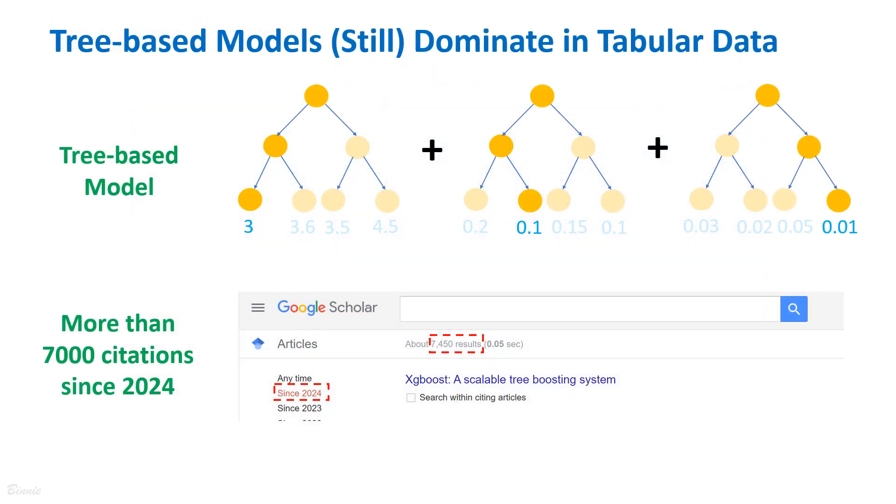In recent years, researchers have shown that tree-based machine learning models such as LightGBM and XGBoost, or more generally, gradient boosting models, still dominate tabular data modeling and show superior performance over deep learning models in general.